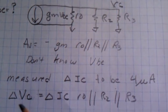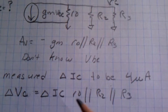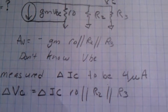So rather than a gain, what I get is a delta VC, which is delta IC in parallel with the RO, R2, and R3.